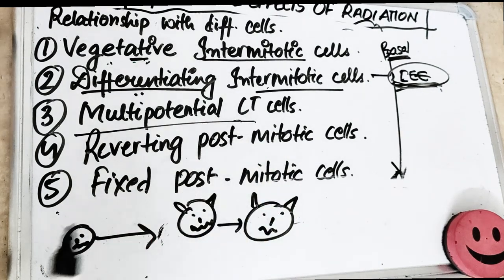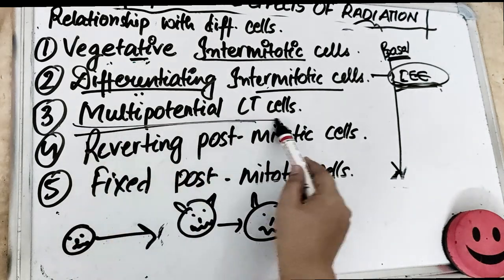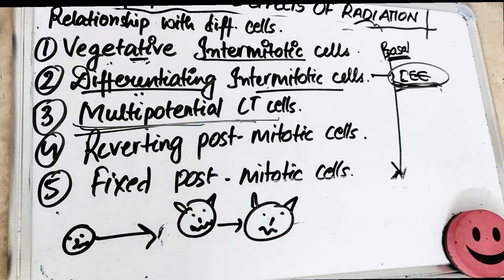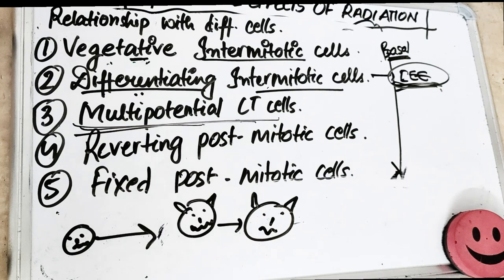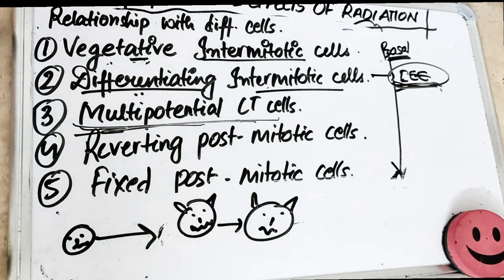The third type is the multipotential connective tissue cell. These cells divide irregularly — only when there is a demand, otherwise they do not divide. Examples include fibroblasts and mesenchymal cells. These cells undergo mitosis only in response to demand, and they also undergo some amount of differentiation. Other examples in this category include cells of the adrenal cortex, cartilage, epithelium, liver, and pancreas.